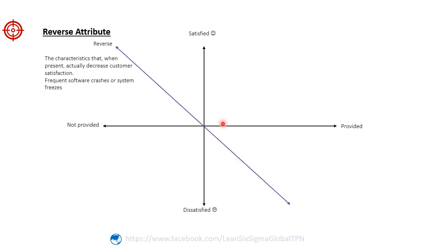Reverse attributes are characteristics that when present actually decrease customer satisfaction. These attributes are often unexpected and can elicit negative emotions or frustration in customers. It is crucial for businesses to identify and address reverse attributes to prevent dissatisfaction among their customers. For example, a reverse attribute for a smartphone would be frequent software crashes or system freezes. If the smartphone exhibits these issues unexpectedly, it would create frustration and dissatisfaction among customers, leading to a decrease in their overall satisfaction.